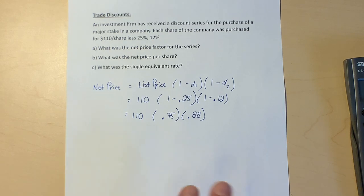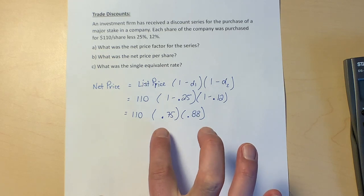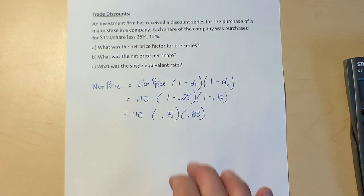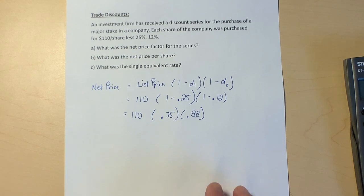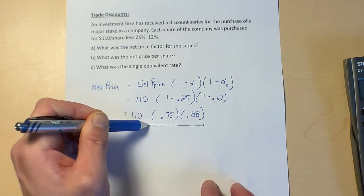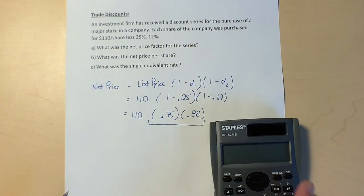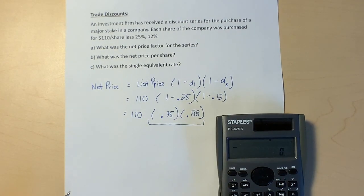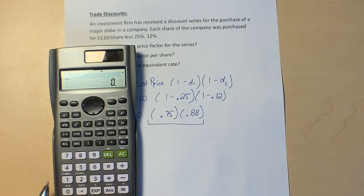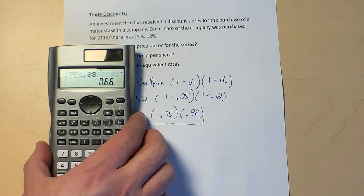The 0.25 and the 0.12 was the discount. The 0.75 and the 0.88 is the price that we're actually paying. I'm going to take these two things only and multiply them together. So 0.75 times 0.88 equals 0.66.